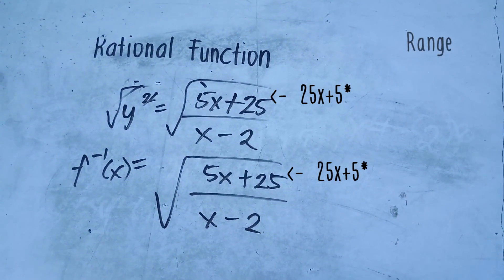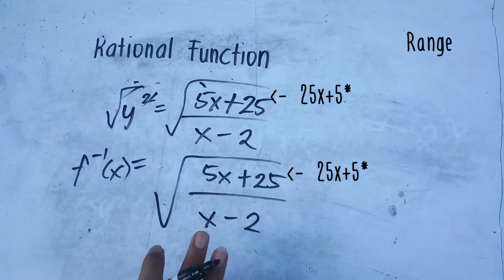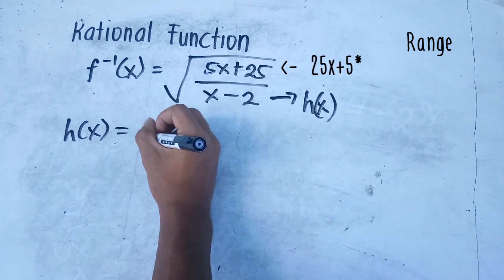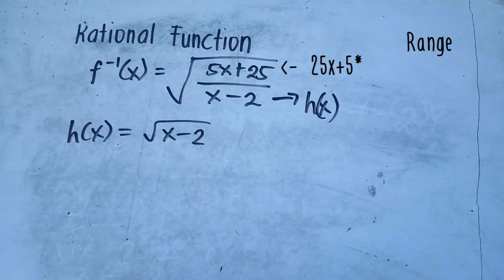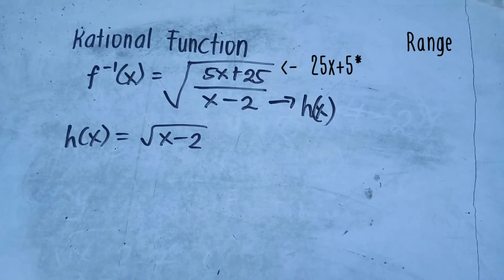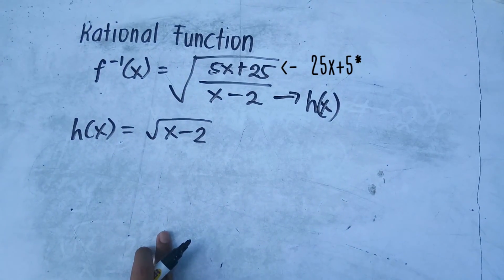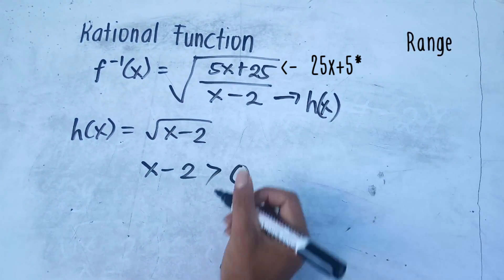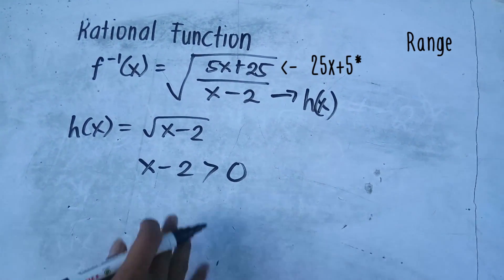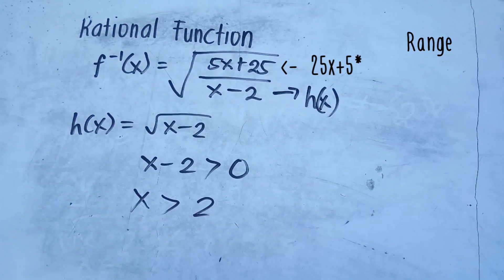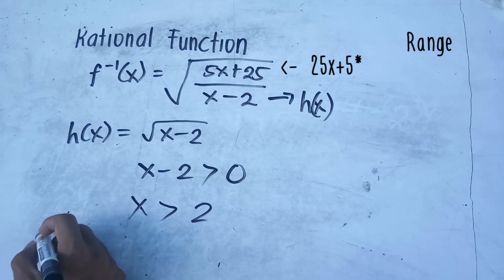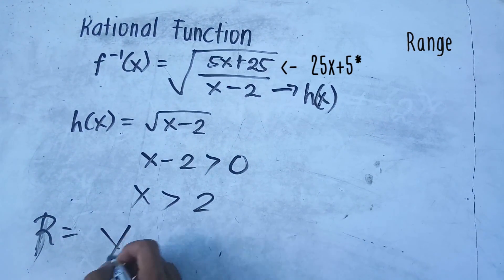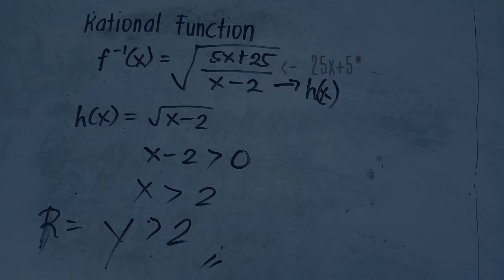After identifying the inverse function, we need to find the domain of this resulting function. The h of x is x minus 2 under the radical. In a radical expression, the radicand must not be negative, so x minus 2 must be greater than or equal to zero. Therefore, x is greater than 2, which means the range of our original function is y greater than 2.